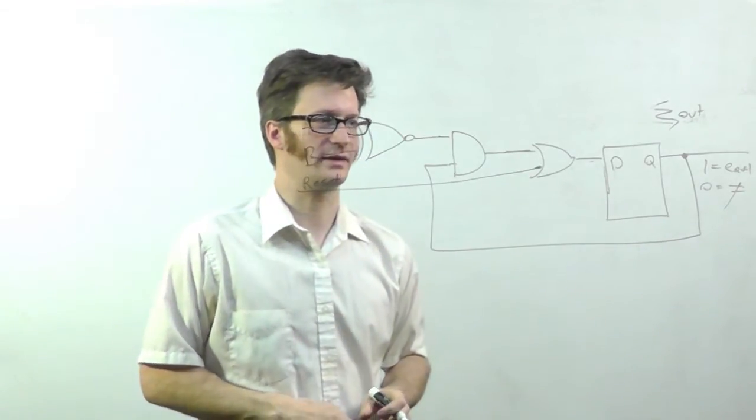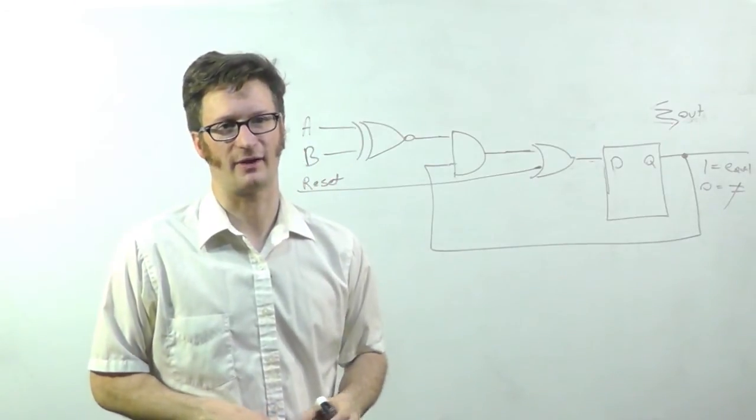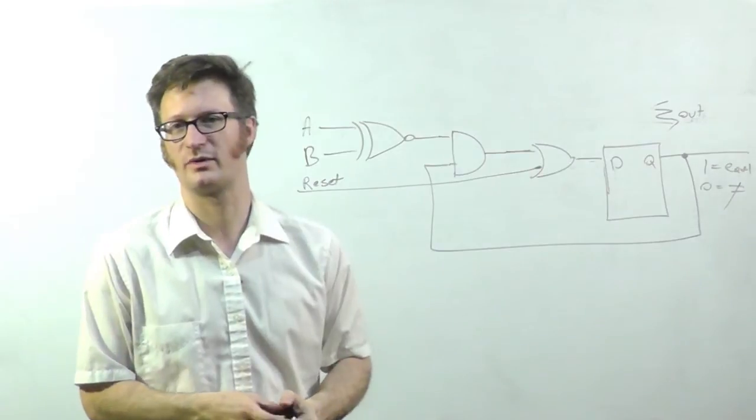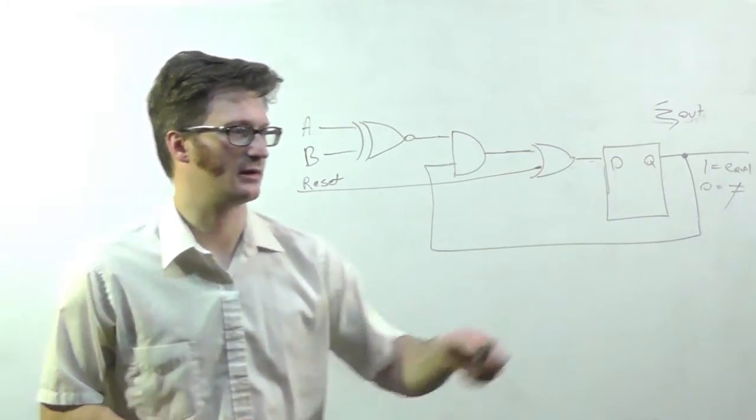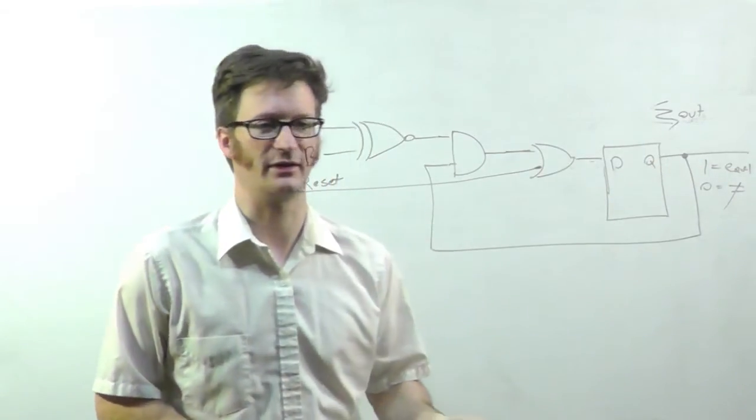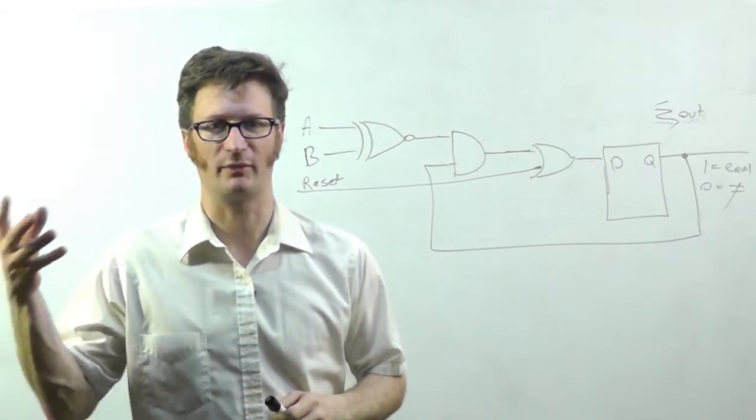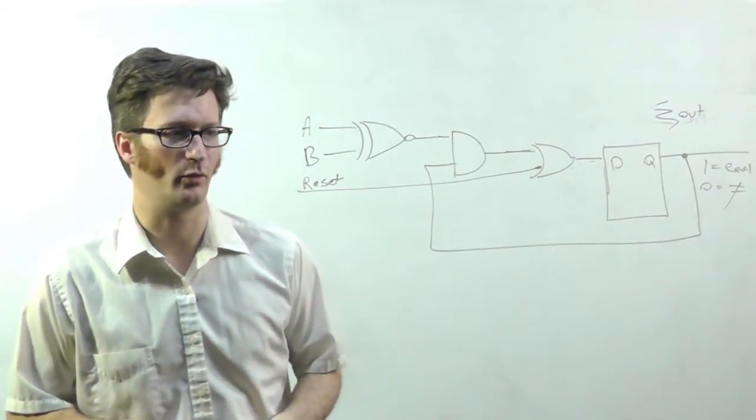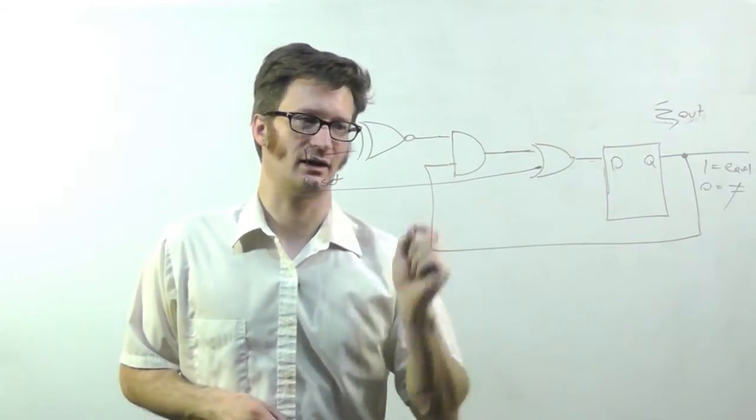What that allows me to do is if I've run a couple numbers through there and they were determined to be not equal, then I'll have a zero over here. If I want to compare two more numbers, I need to get my output back to a one. And that allows me to do that.